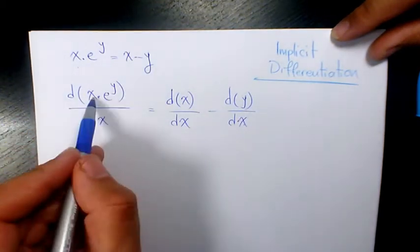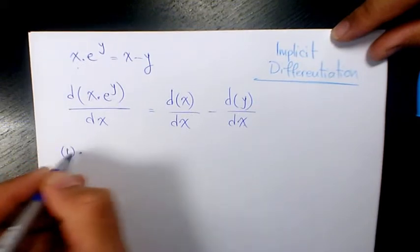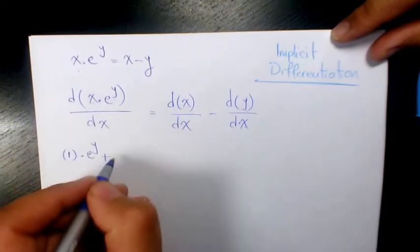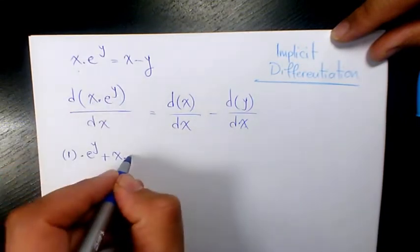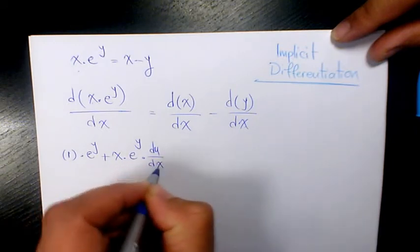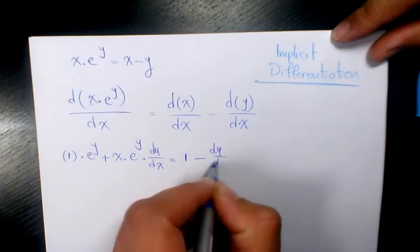This part is going to be the product rule. The derivative of x is 1 times e^y plus x times the derivative of e to the power of y, which is e to the power of y times dy over dx. dx over dx is 1 minus dy over dx.